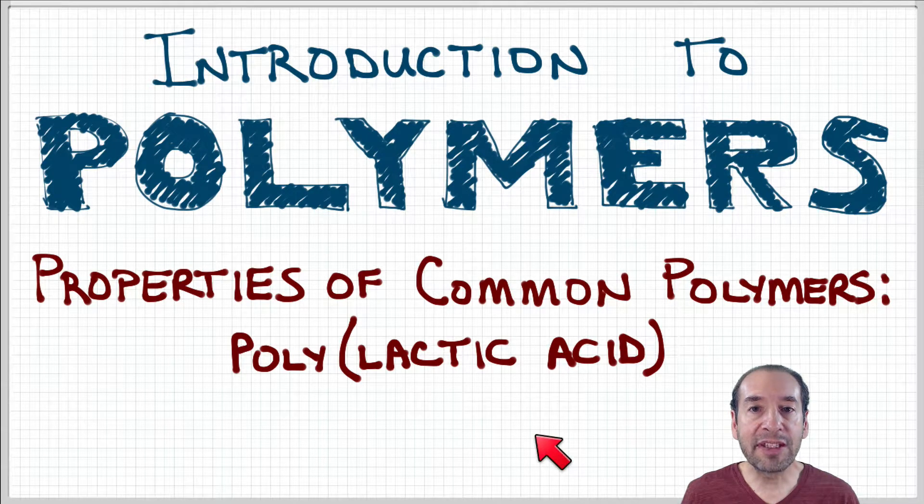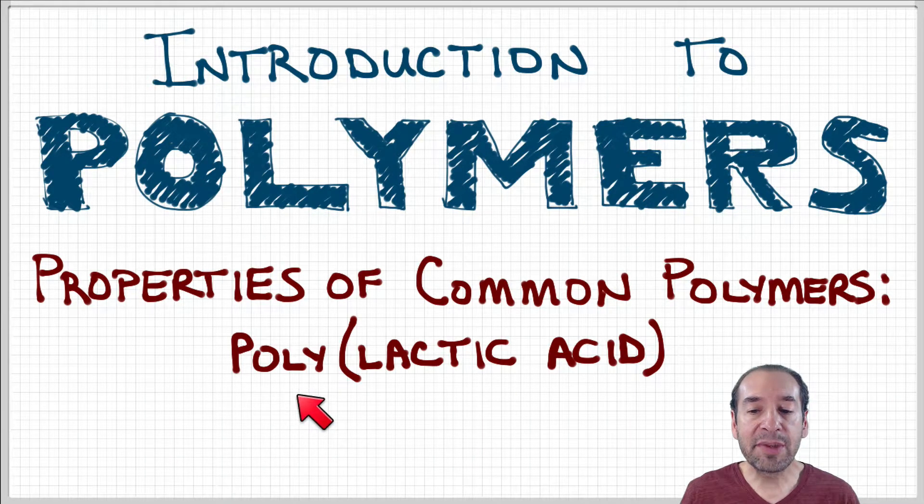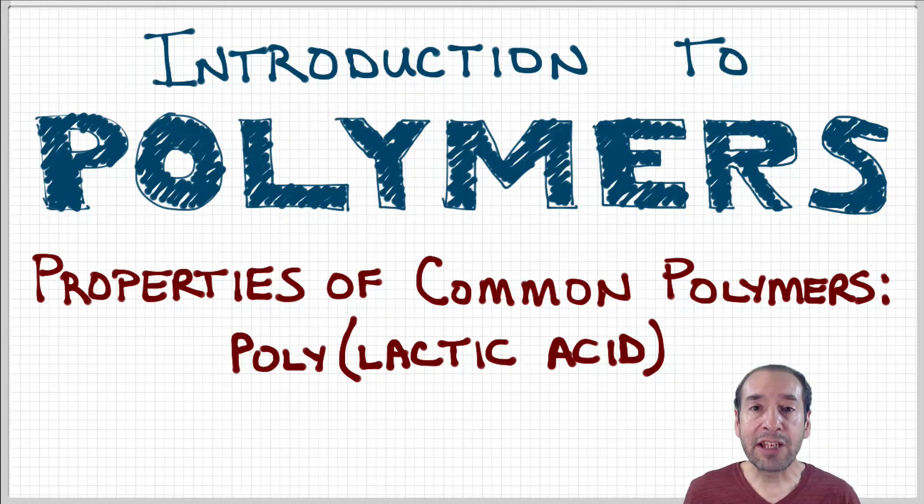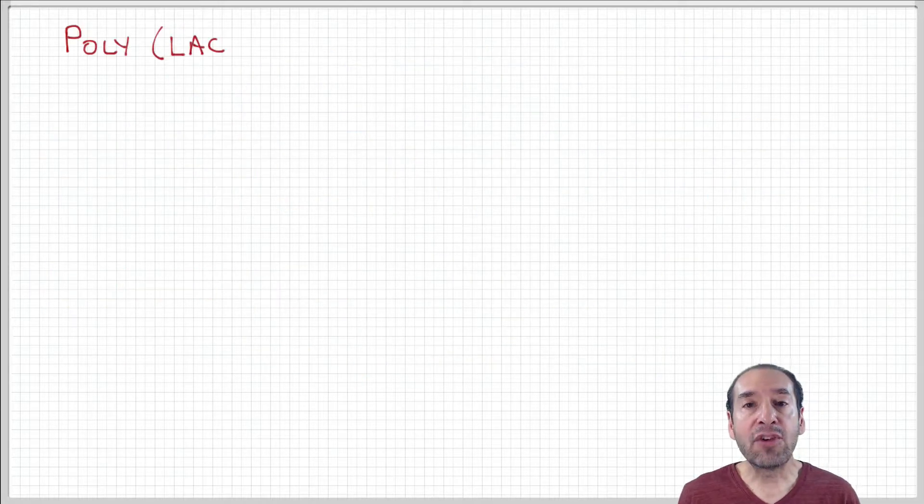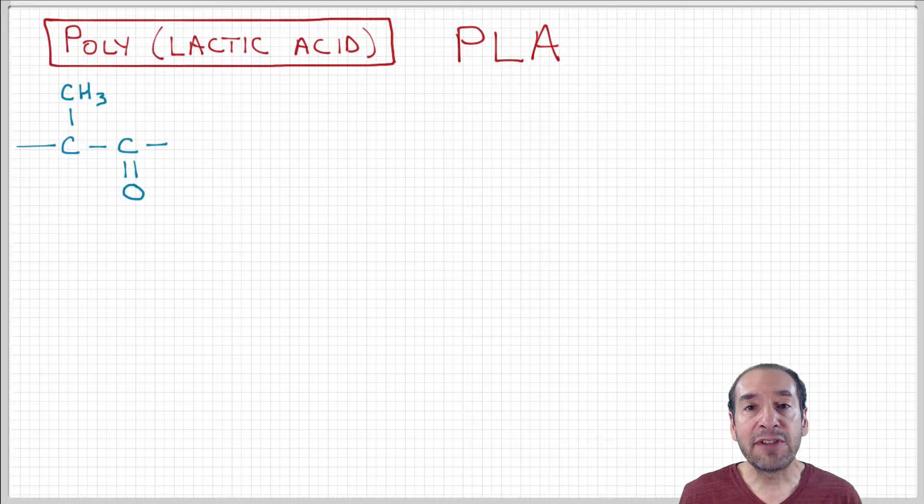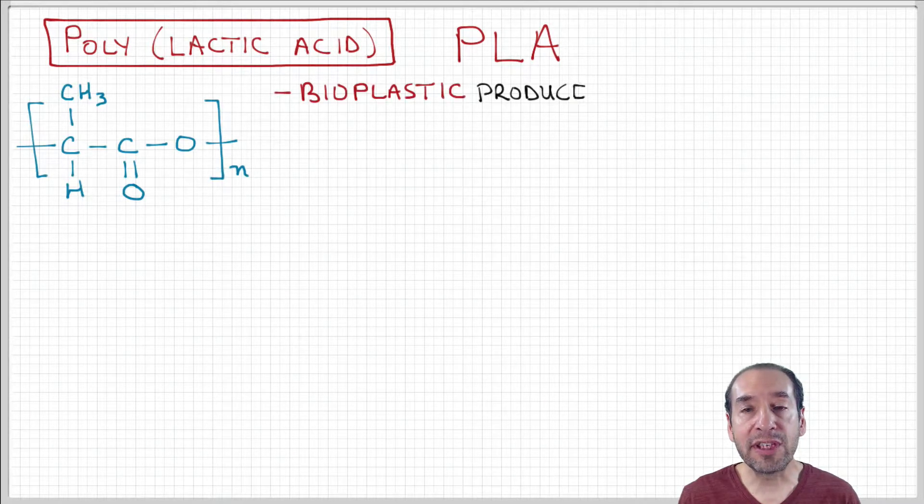The next material I want to highlight is polylactic acid. This has a couple of features that are important. One is that it's produced from natural feedstocks, and the other one is that it's a degradable polymer, so it breaks down over time. That's of interest today because people are interested in controlling waste associated with disposable plastic materials.